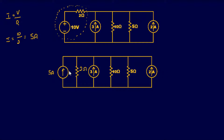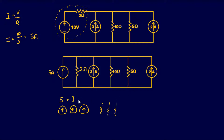Now looking at this circuit, we have three current sources in parallel and three resistors in parallel — very simple. Imagine all three current sources side by side pointing the same direction, and all the resistors in parallel next to each other. Any time you have current sources pointing the same direction in parallel, you just add them together: 5 plus 3 plus 2 gives your total current. If one were pointing the opposite direction, you'd subtract it.